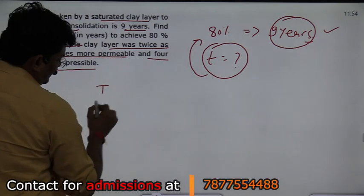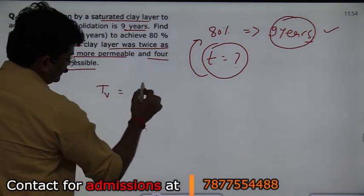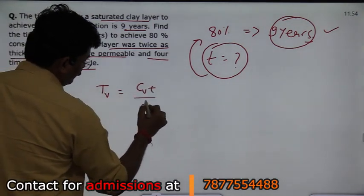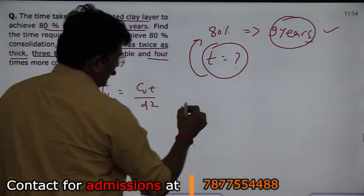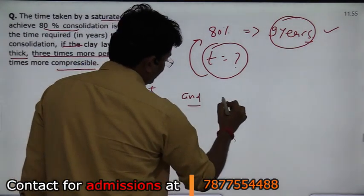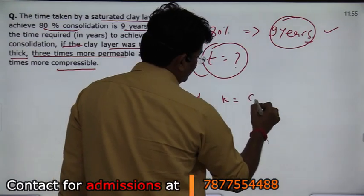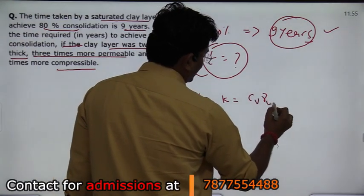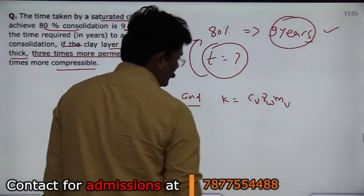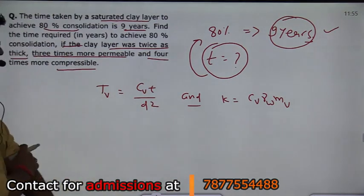You have to see that here a time factor is defined as Tv equals Cv multiplied by T divided by D square. This is the formula. And there is also a very important formula. You remember that K equals Cv, Mv multiplied by gamma w. So this is the formula for K.